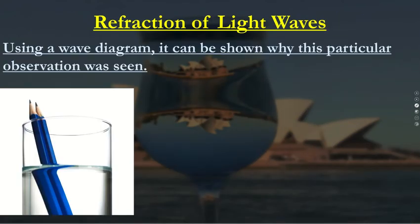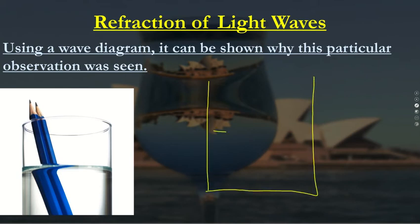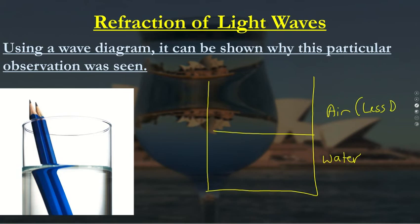Here we have a diagram of refraction of light, with a pencil immersed in air and water. We know that water is more dense than air. What we mean by density is there are more particles in water packed together than in air — so air is less dense, and water is more dense.